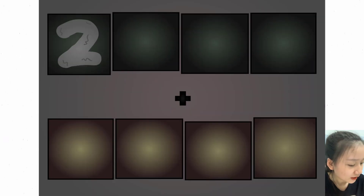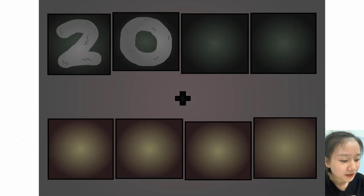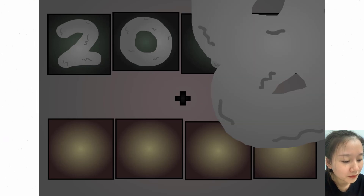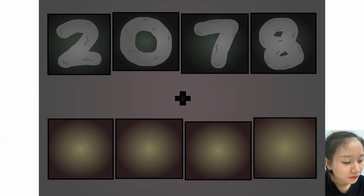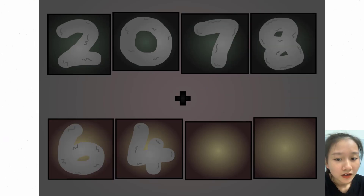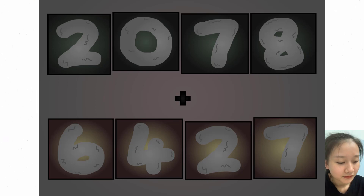Two thousand seventy-eight, plus six thousand four hundred twenty-seven, equals...